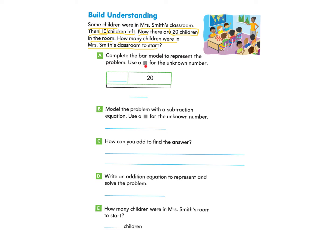Use a square for the unknown number. We are looking to find out how many children were in Mrs. Smith's class to start. That's going to be our unknown — we don't know what that number is. So we are going to put that box here. What we do know is that 10 children left, so we write in 10 here. Then we were told that 20 children were in the room, which is 20.